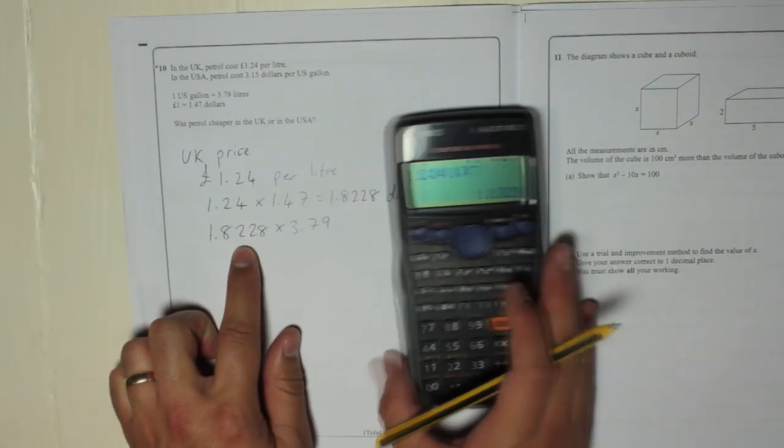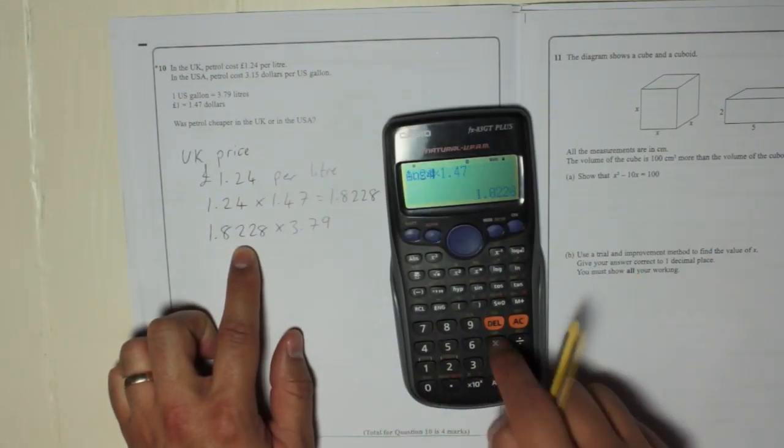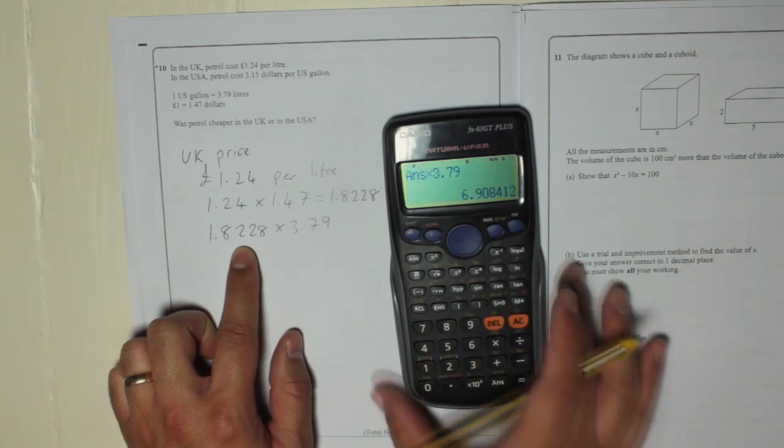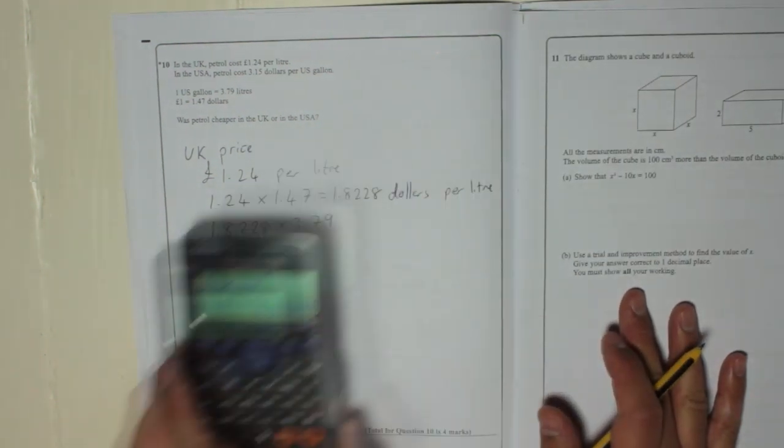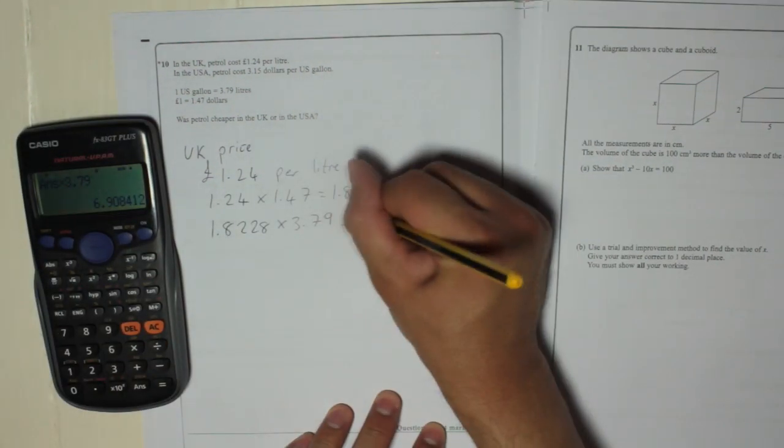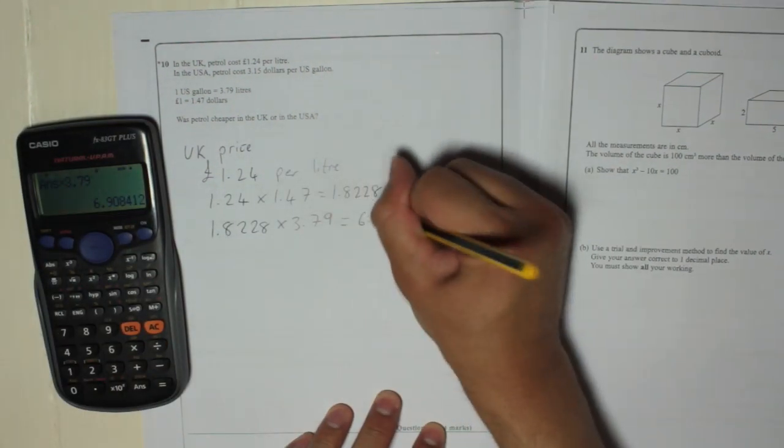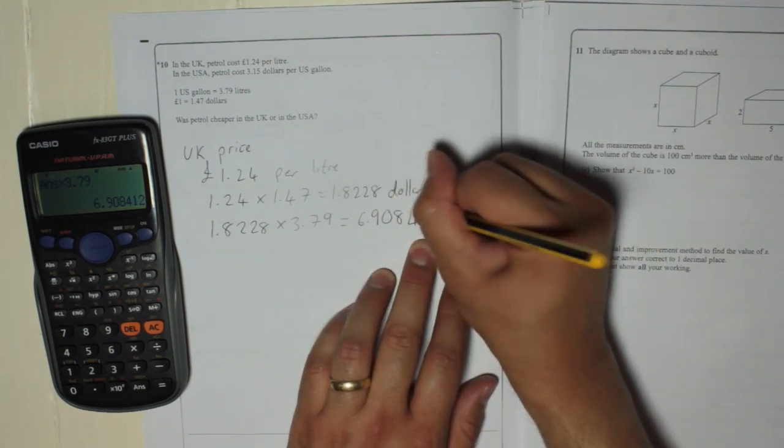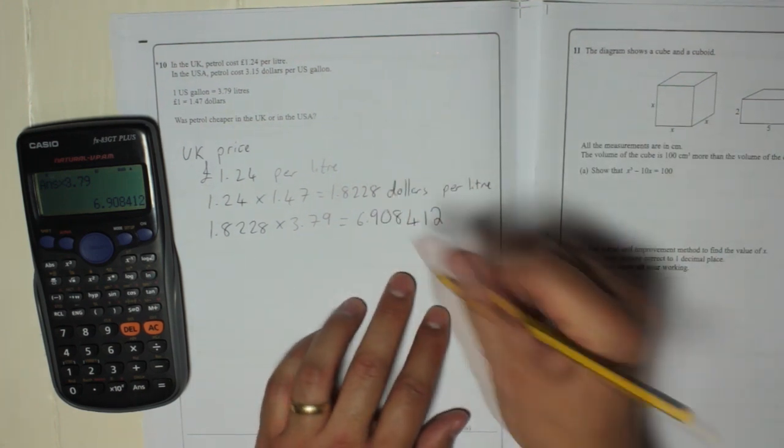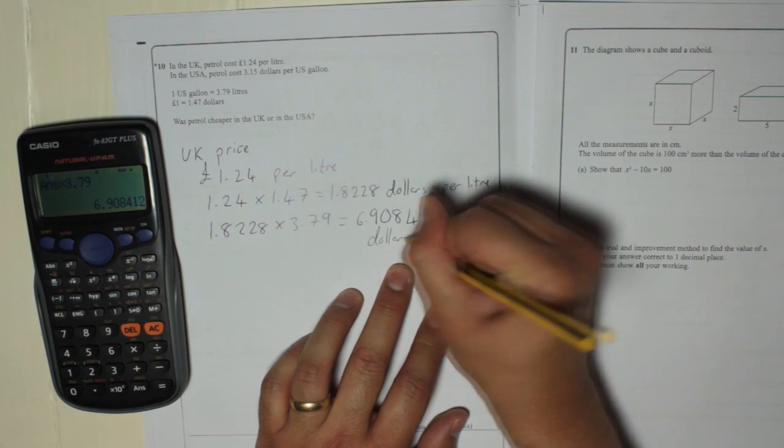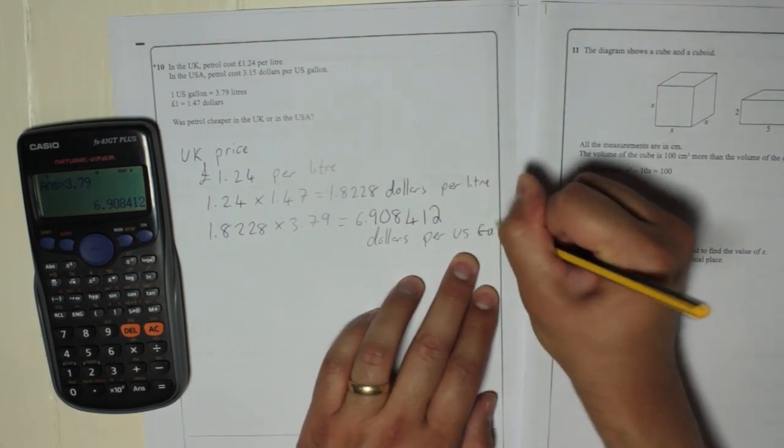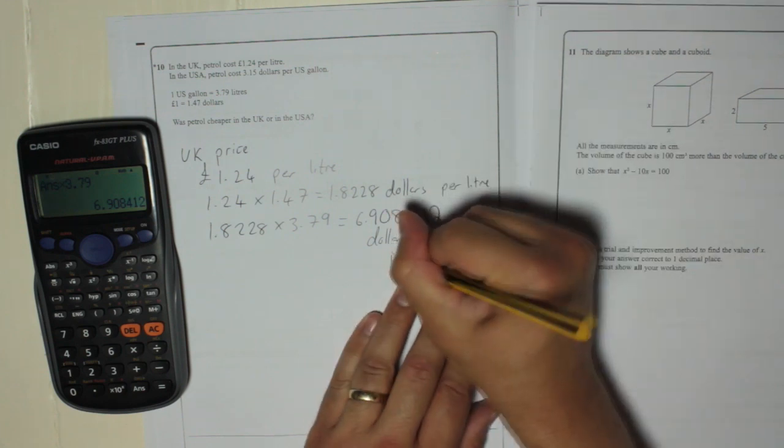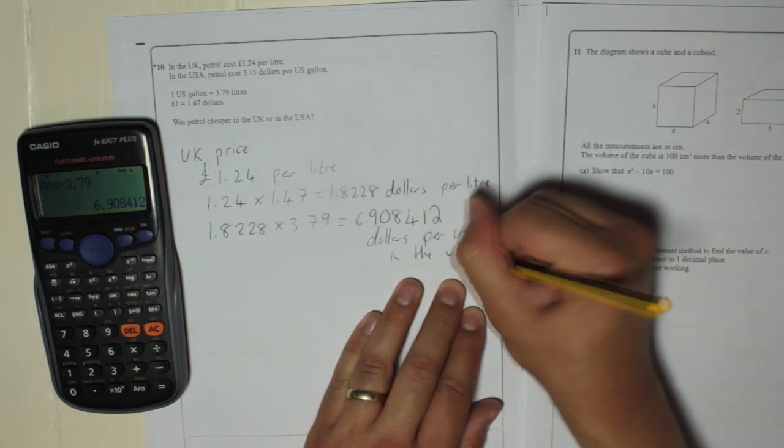So 1.8228, which is already in my calculator, times by 3.79 is 6.908412. I'll write all of that in. 6.908412. So that is dollars per US gallon in the UK.